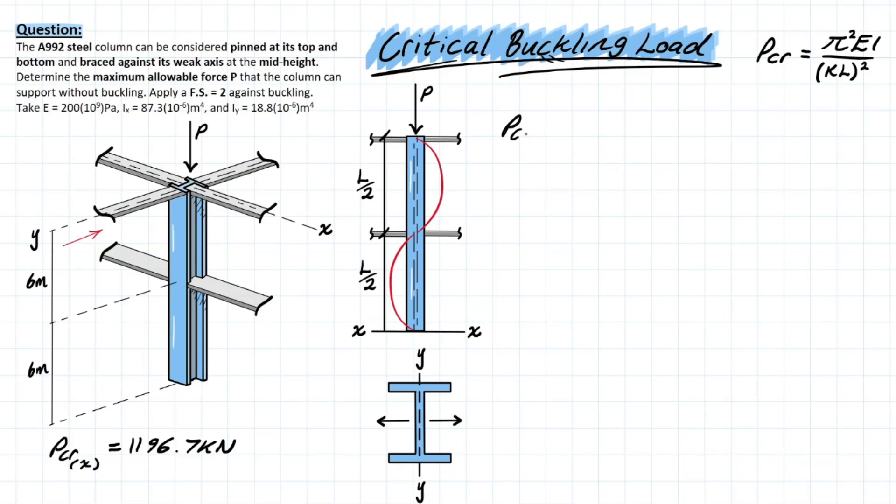We're going to be looking at the critical buckling load with respect to the y-axis. We're doing the exact same thing we did before except now we're using Iy and KL. KL equals our effective length. K is 1 because we have a pin-pin and we're going to assume these braces are pinned as well. L now represents the length of a single buckled shape, so L equals L over 2 in this case.